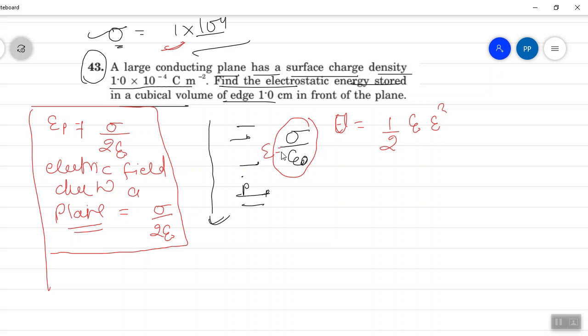Energy stored in a given volume is half epsilon naught E square into V. What is V here? V is basically volume. This is the energy stored in the given volume and this is the energy density.